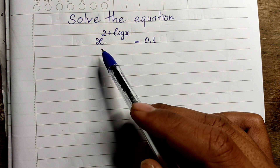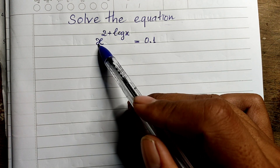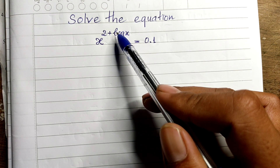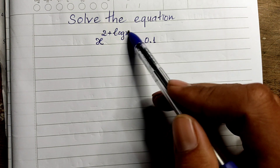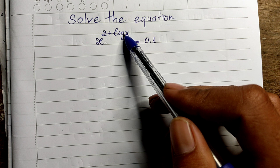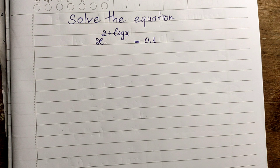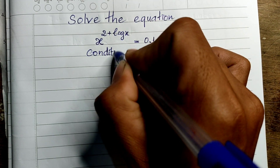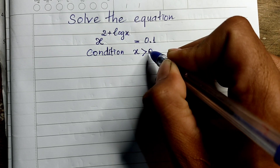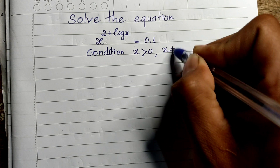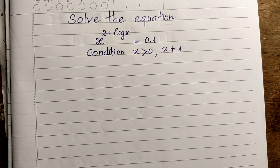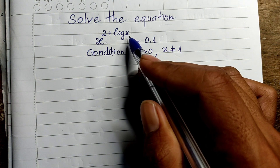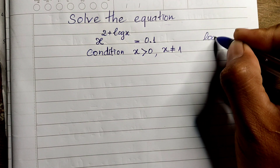Okay, in this equation we have the variable h in the exponent — this is an exponential function — and we also have the variable h inside a logarithm function. Before we solve this, we must state the condition: x must be positive and x must not equal one.